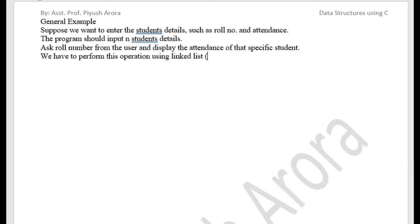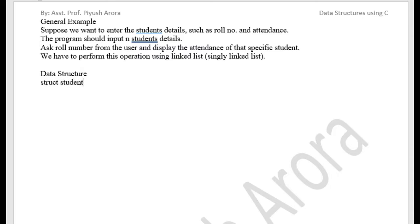We are assuming, as a beginner, we are performing this operation using a singly linked list. First, let us understand how this operation will be done using a singly linked list. Inside the singly linked list, first you need to define the data structure. We will define the data structure — struct student. You can write struct node or struct student.